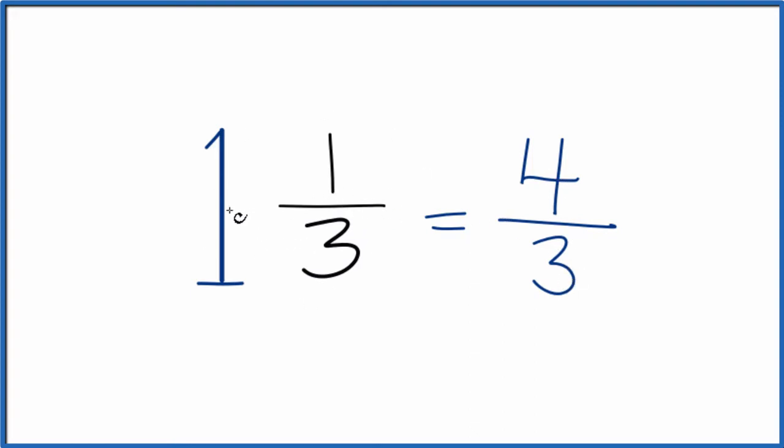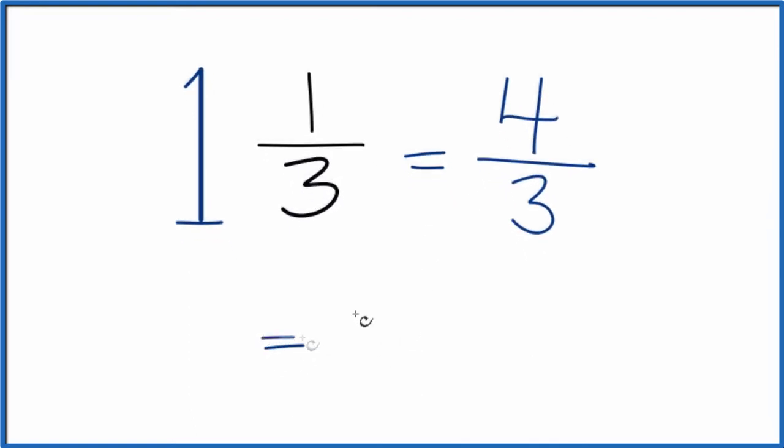So 1 and 1/3, this mixed number here, that's equal to the improper fraction 4/3. Now you can divide 4 by 3 on your calculator, or you can do it longhand, and you end up with 1.333.